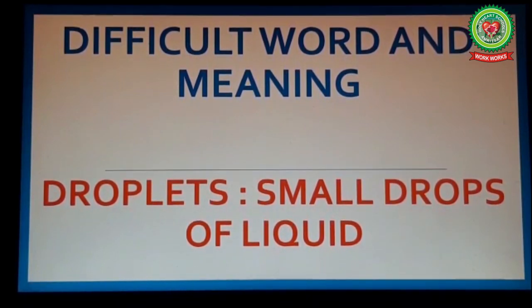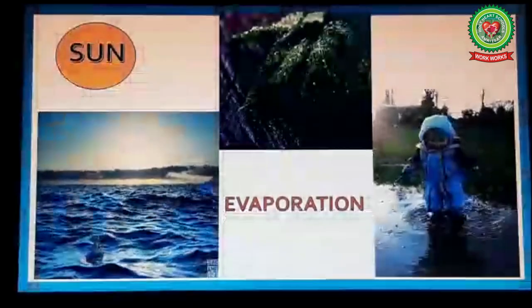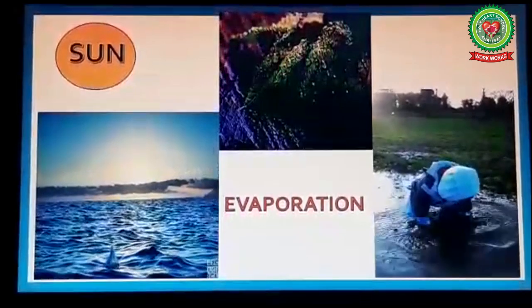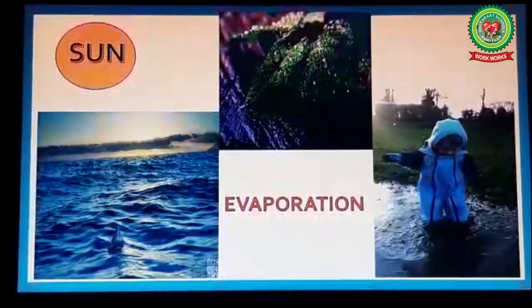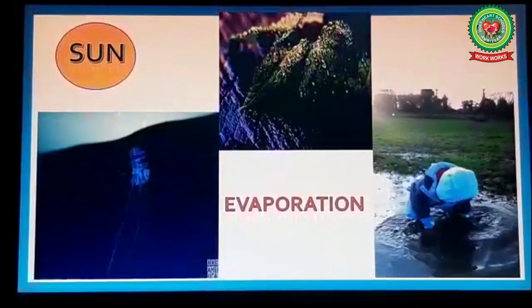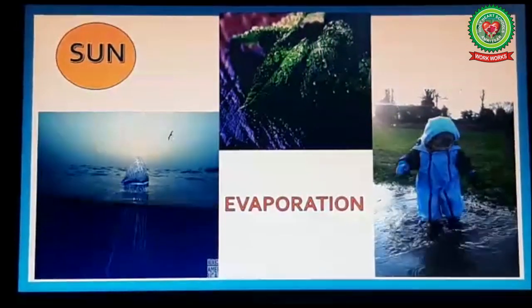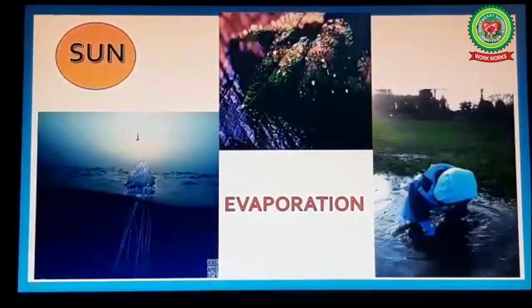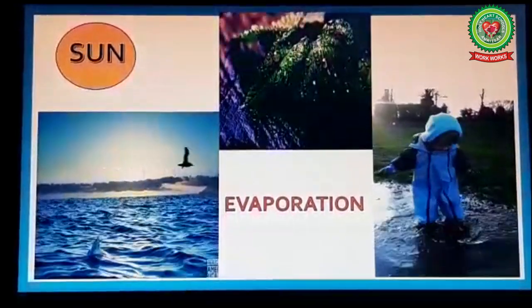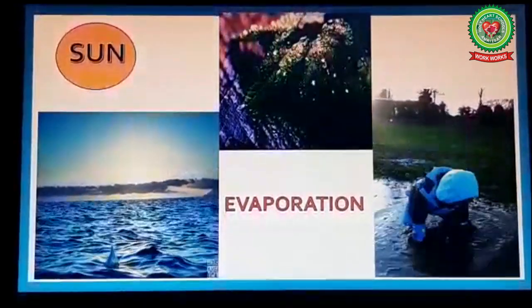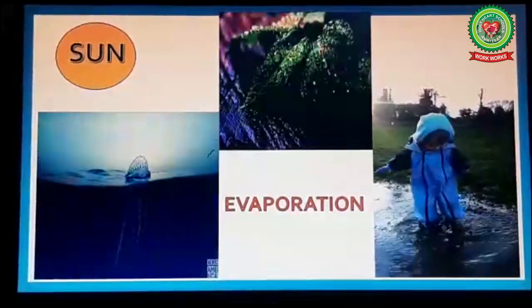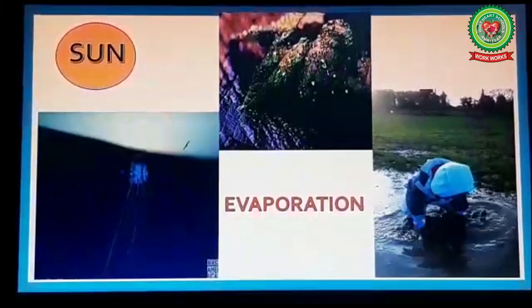Water is present on the earth's surface in the form of water bodies like oceans, rivers, seas, etc. It is also present on the surface of leaves. During the daytime, the sun shines in the sky and due to the heat of the sun, water changes into water vapor.